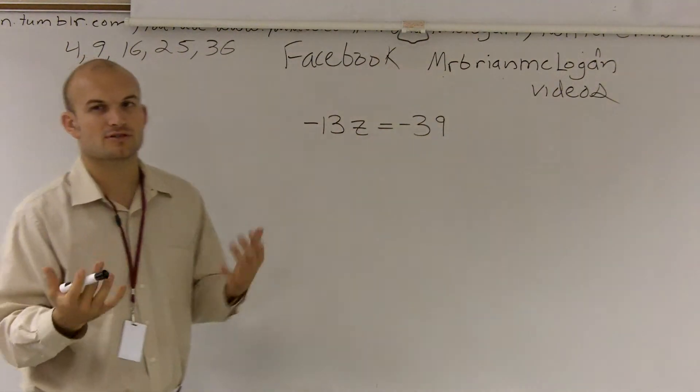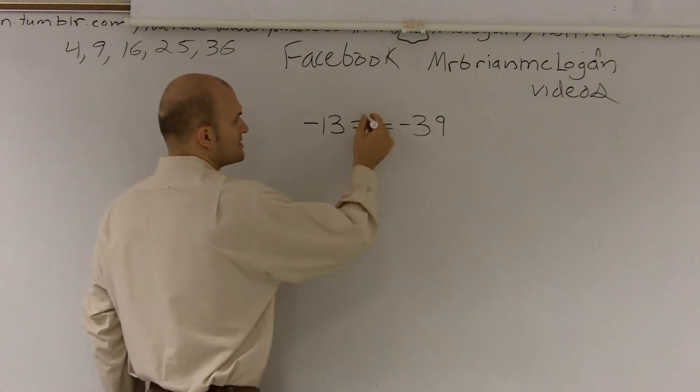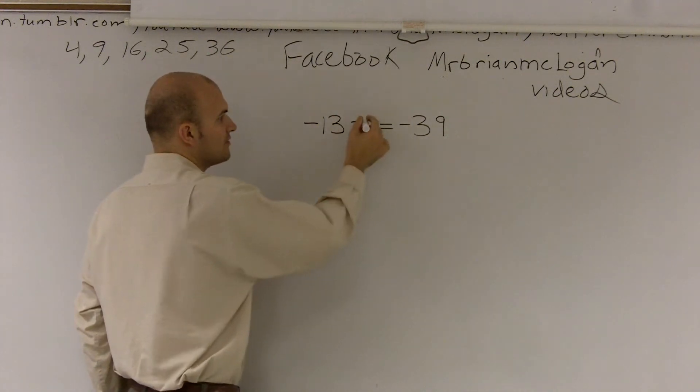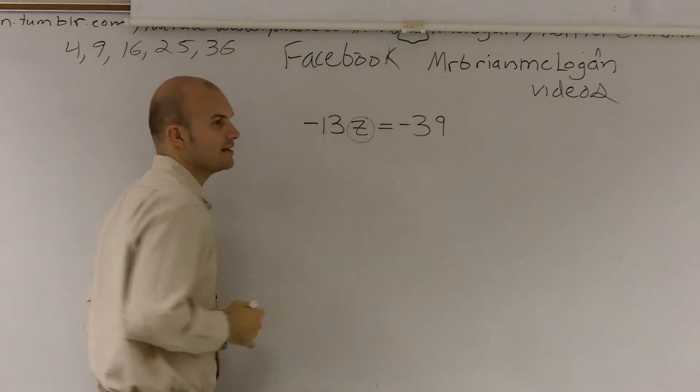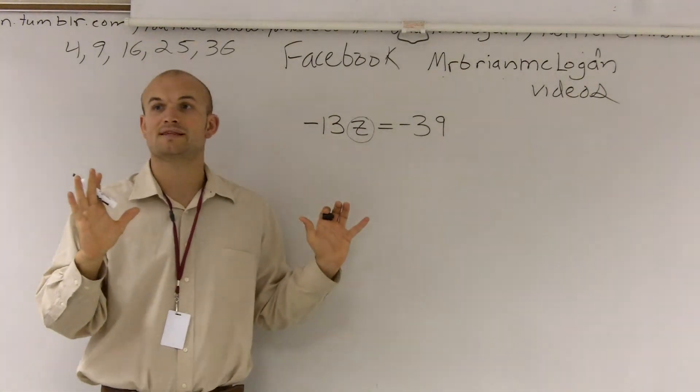So a couple of things, some tricks you might do to help you out: one thing I could say is, well, if I want to get this z by itself, if I kind of circle it, I can think of pinning the z against the board. That means I'm not going to do anything to that z.